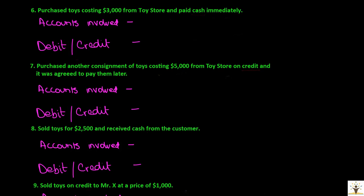Transaction: purchased toys costing $3,000 from toy store and paid cash immediately. Toys are goods for this business. Since the business is purchasing goods, we use the purchase account. And since the business is paying cash, cash account is also affected. When goods are being purchased, the business is receiving goods — goods is an asset — hence purchase account will be debited. And since the business is paying cash, cash is decreasing, and when an asset decreases it is credited.